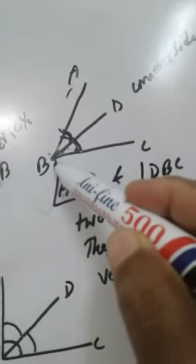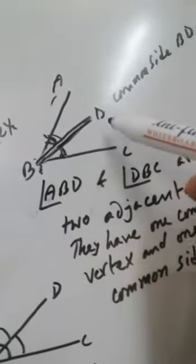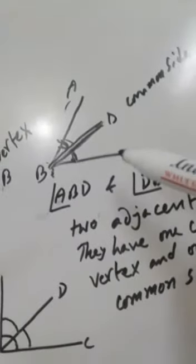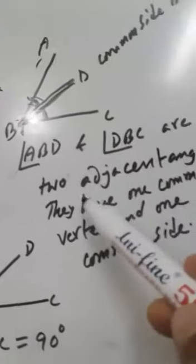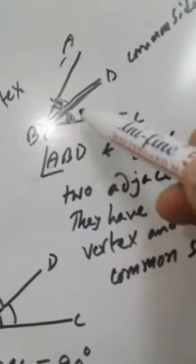Here are two angles: angle ABD is one angle, and angle CBD is another angle. These two angles meet at a point. B is the common vertex of both angles, and BD is the common side. Because they share a common vertex and a common side and are attached to each other, this is called an adjacent angle.